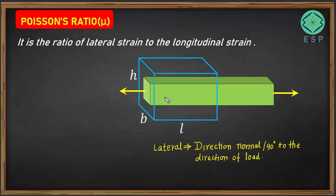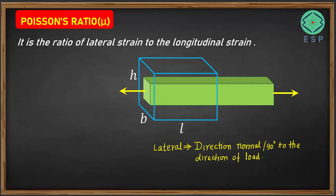We are applying load along the length, but the height is perpendicular to the length. So in this particular direction, there is a reduction in the height taking place — this is called lateral, this direction is lateral. The breadth is also perpendicular to the length, so breadth is also a lateral direction. So there are two lateral directions here.